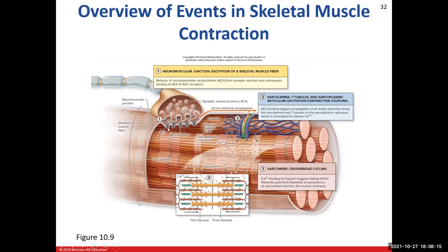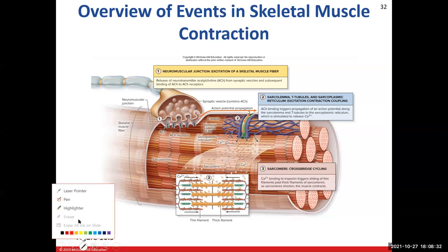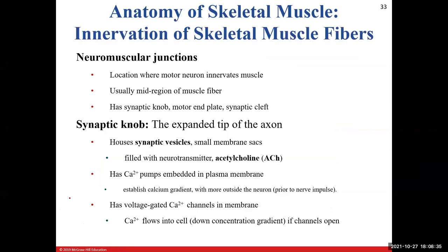Excitation of the skeletal muscle fiber is going to occur at what we call the neuromuscular junction. That's where the motor neuron is going to make contact with the muscle fiber. We know a little bit of what goes on there because we addressed it in Chapter 12, but now we're going to see how that pertains to skeletal muscle tissue.